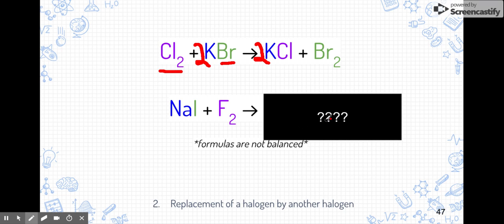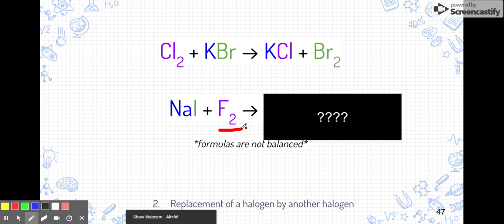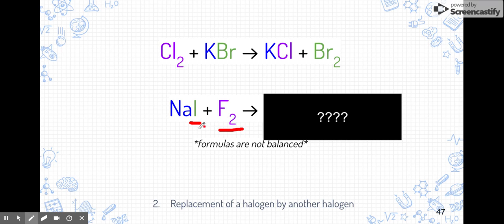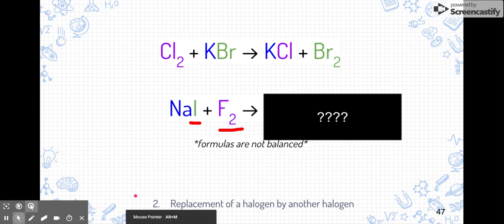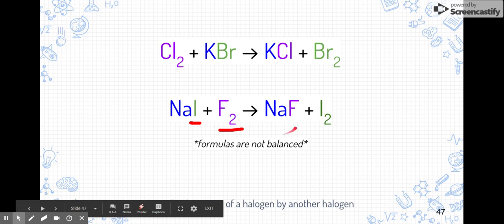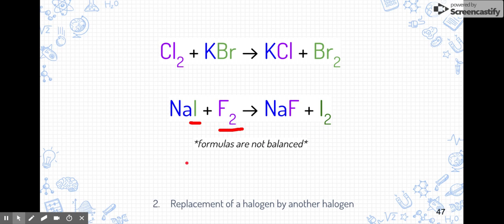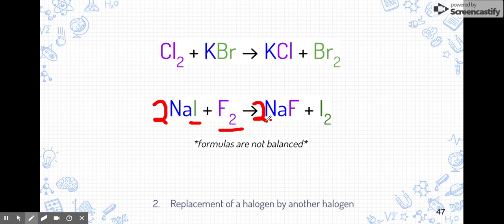Try pausing and figuring out this last example yourself. Here we have sodium iodide reacting with fluorine (F₂), which is our single halogen element. Fluorine will replace iodine because it's also a halogen — no activity series needed. The products are sodium fluoride and iodine gas (I₂), which is diatomic. To balance: put a 2 in front of sodium iodide and a 2 in front of sodium fluoride. That covers everything you need to know about single replacement reactions — go ahead and get started on your practice.